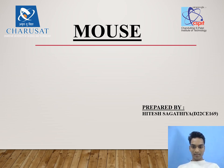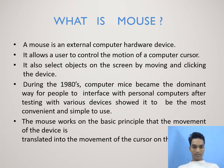Hi everyone, my name is Ite Sagatia, my ID number is D22C169. My topic is mouse. A mouse is an external computer hardware device. It allows a user to control the motion of a computer cursor. It also selects objects on the screen by moving and clicking this device. During the 1980s, computers became a dominant way for people to interface with a personal computer, after testing with various devices showed it to be the most convenient and simple to use.